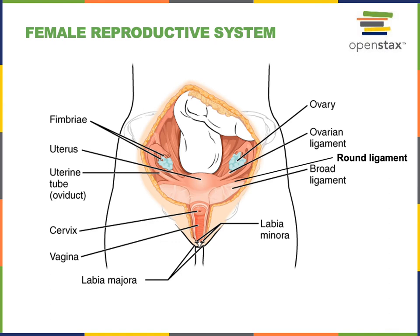The uterus is connected to the uterine tubes that transport the oocyte from the ovary. The uterine tubes are normally the location where fertilization occurs. After fertilization, the zygote continues to develop into an embryo as it moves through the uterine tube and implants into the inner lining of the uterus known as the endometrium, where the embryo grows and matures into a fetus. The uterus supports maturation of the embryo and fetus until childbirth, when the muscular wall contracts to force the infant out through the vagina.